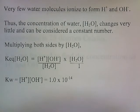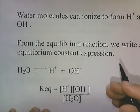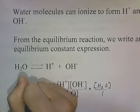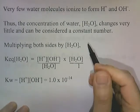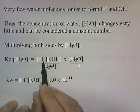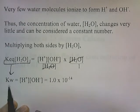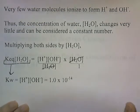Very few water molecules ionize to form H⁺ and OH⁻, and thus the concentration of water changes very little and can be considered a constant. So we multiply both sides of the equation by [H₂O]. Taking K_eq times [H₂O], the concentration of water cancels, and you're left with K_eq times [H₂O] equals [H⁺] times [OH⁻]. In place of this expression, we substitute K_w, so K_w equals [H⁺] times [OH⁻], and it equals 1 × 10⁻¹⁴.